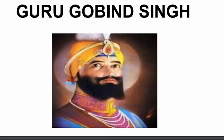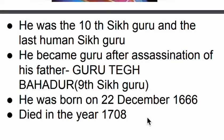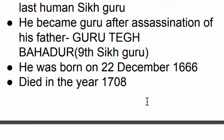Guru Gobind Singh was the 10th and last Sikh Guru. He became the Sikh Guru at the age of 9 after the assassination of his father, Guru Tegh Bahadur, who was the 9th Sikh Guru. Guru Tegh Bahadur was assassinated by Aurangzeb. Guru Gobind Singh was born on 22nd December 1666 and died at the age of 42 in the year 1708.